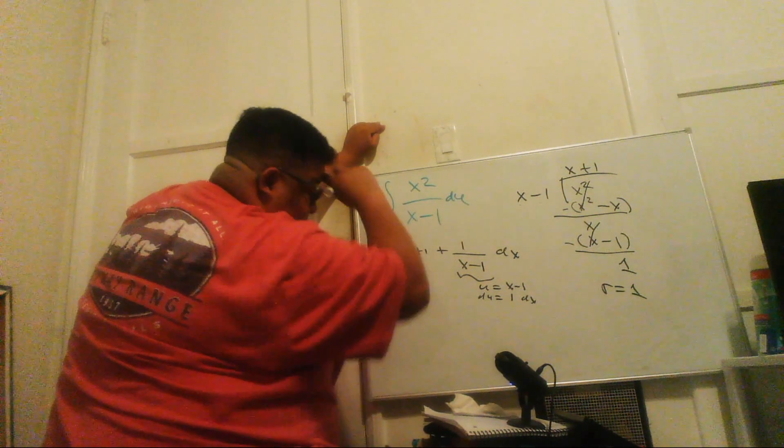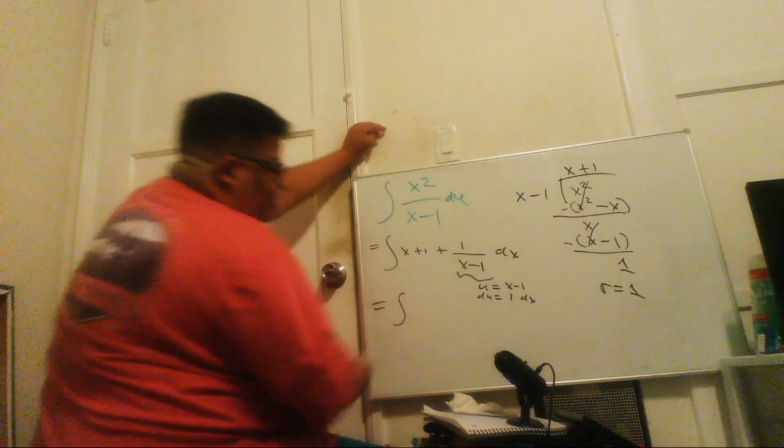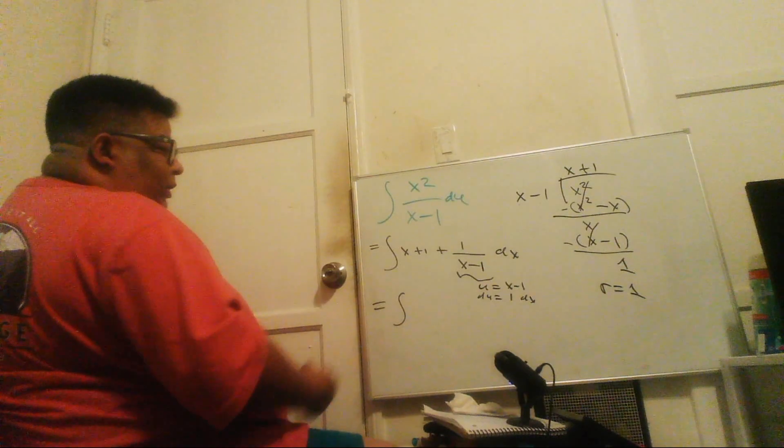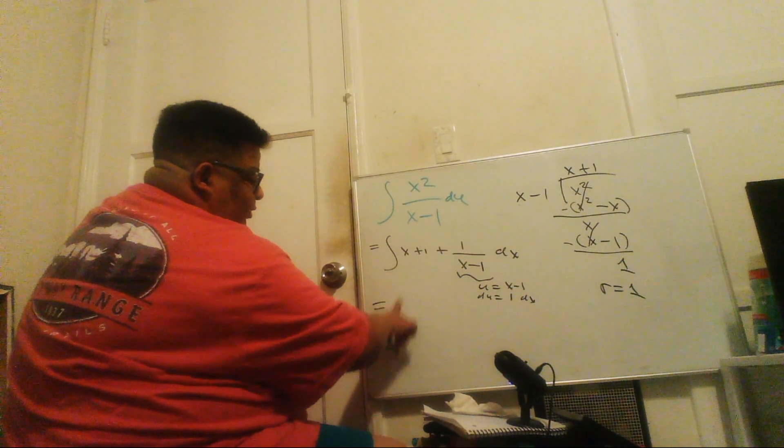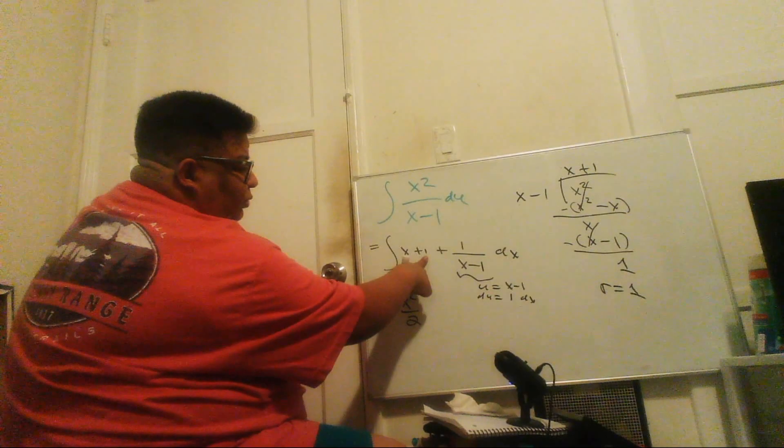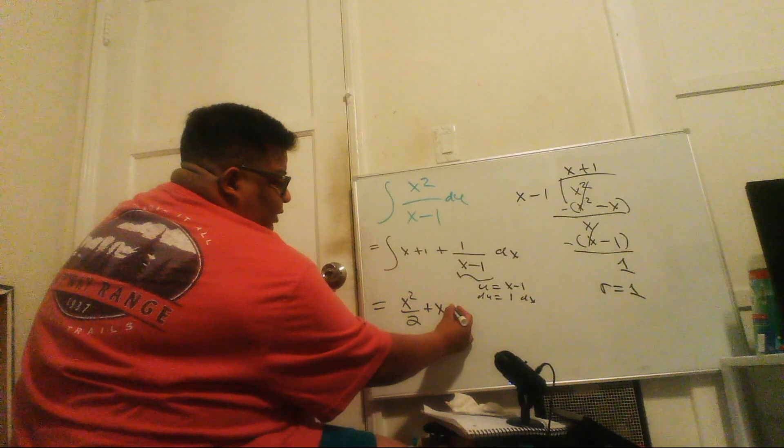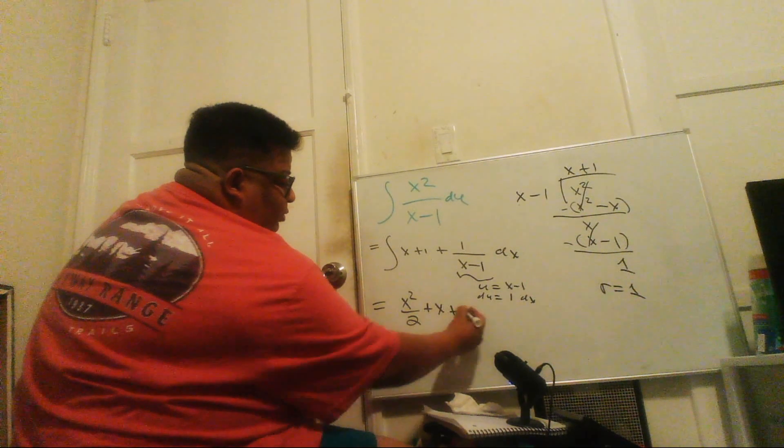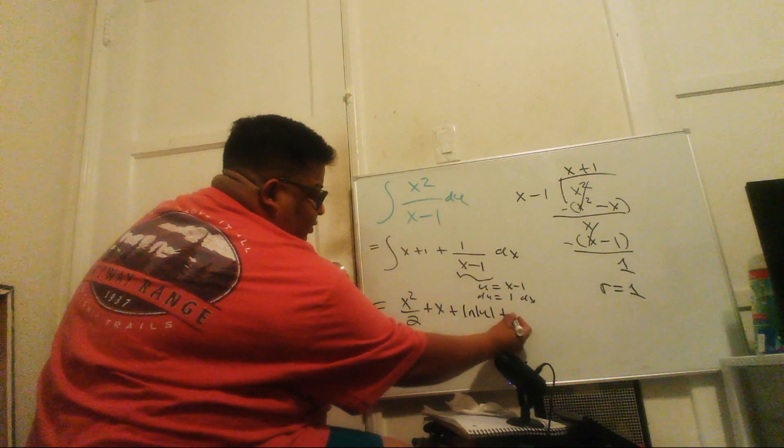So this whole integral basically becomes, using the power rule and applying it to x, that becomes x squared over 2, and then the power rule here, that will be plus x, and then the final part will be plus ln of u plus c.